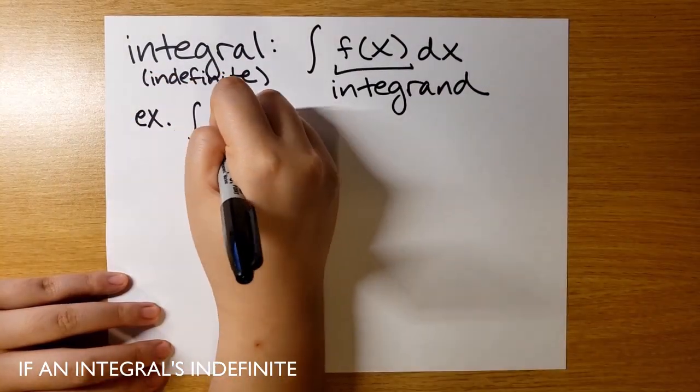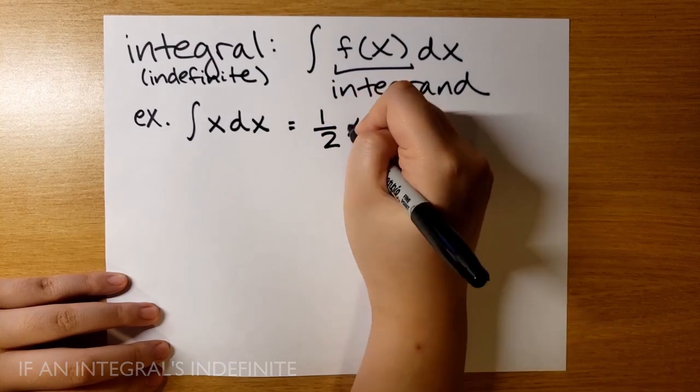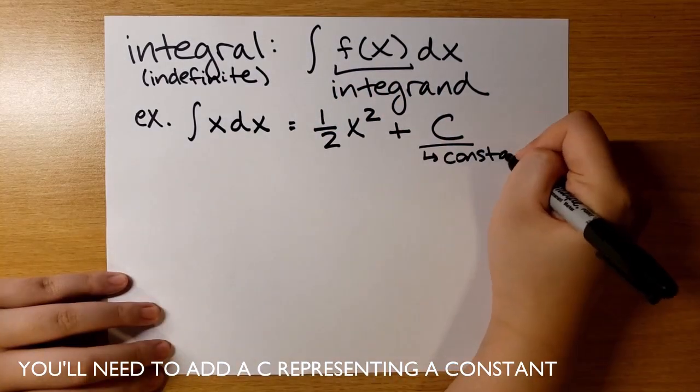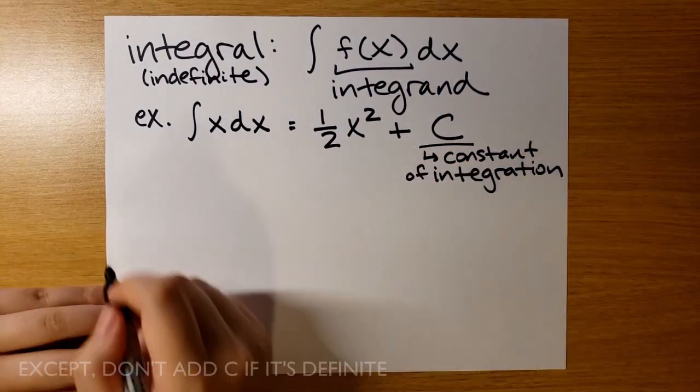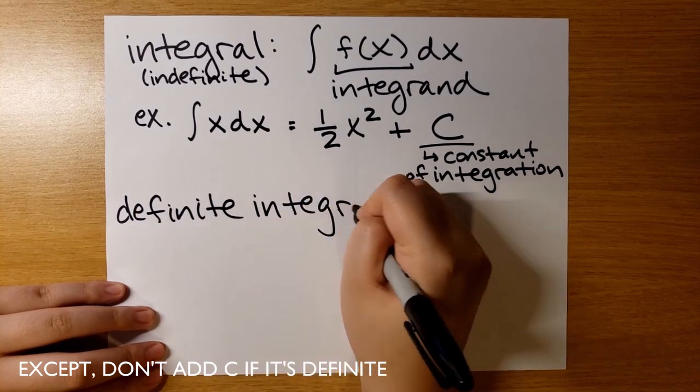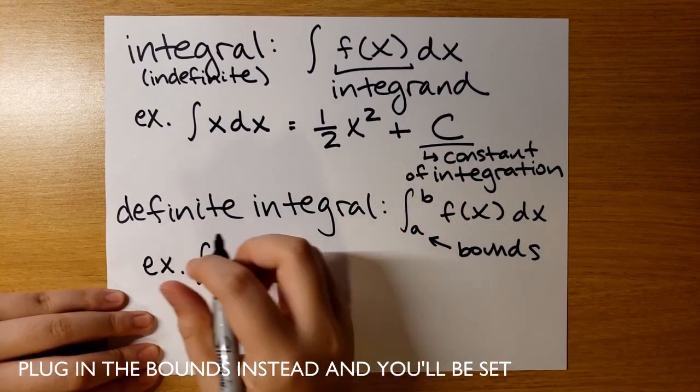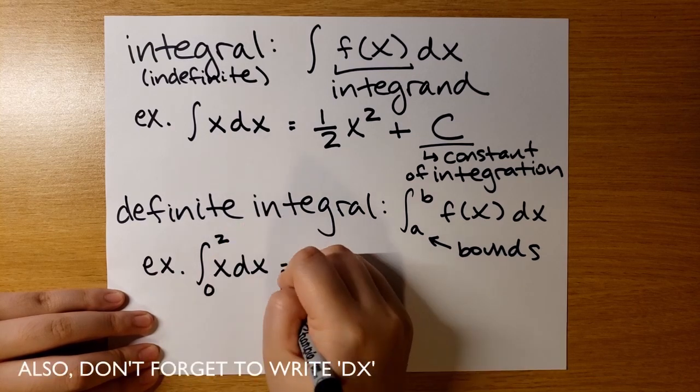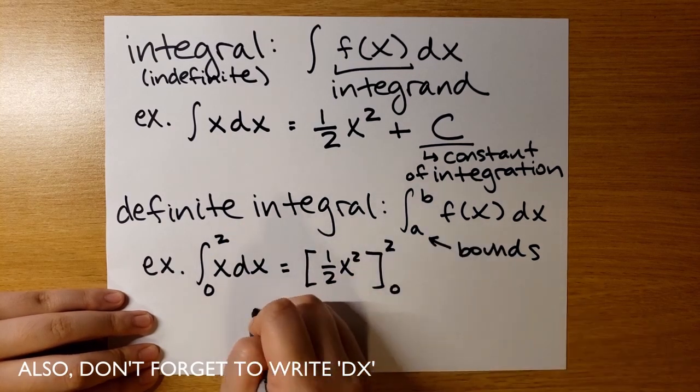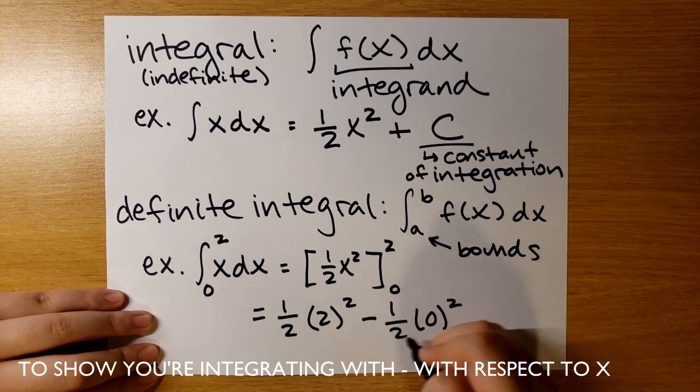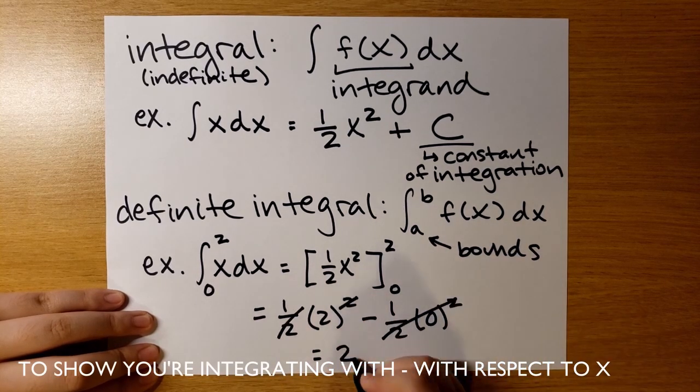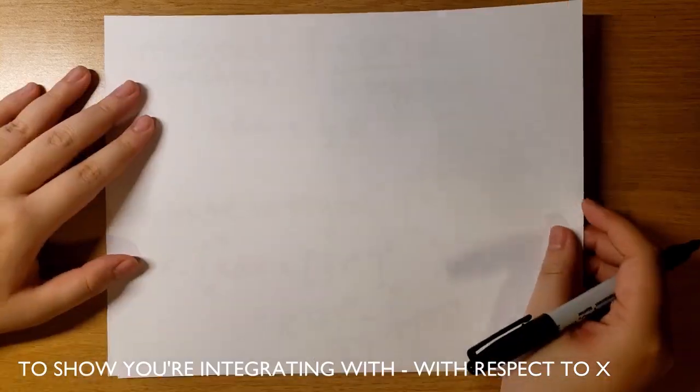If an integral's indefinite, you'll need to add a C representing a constant. Except don't add C if it's definite. Plug in the bounds instead and you'll be set. Also don't forget to write the dx to show you're integrating with respect to x.